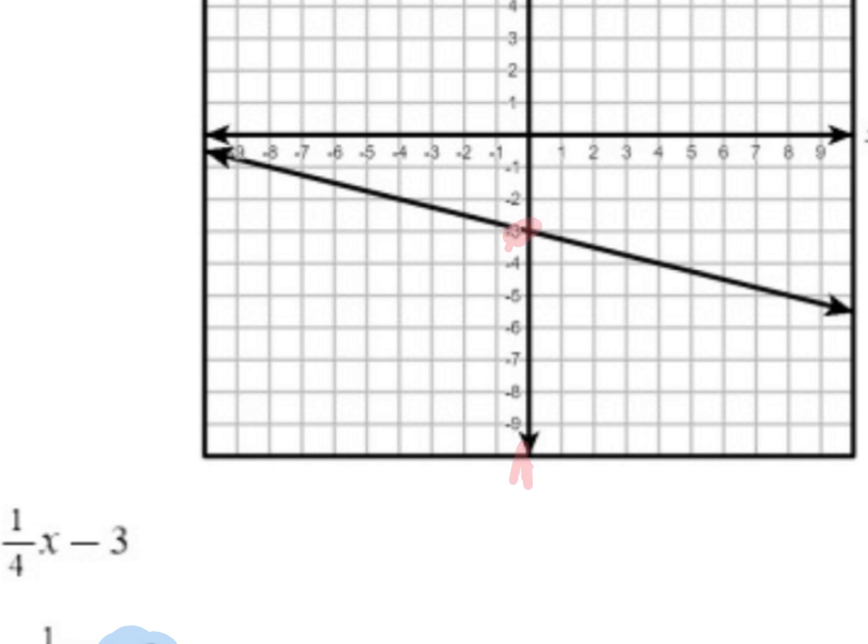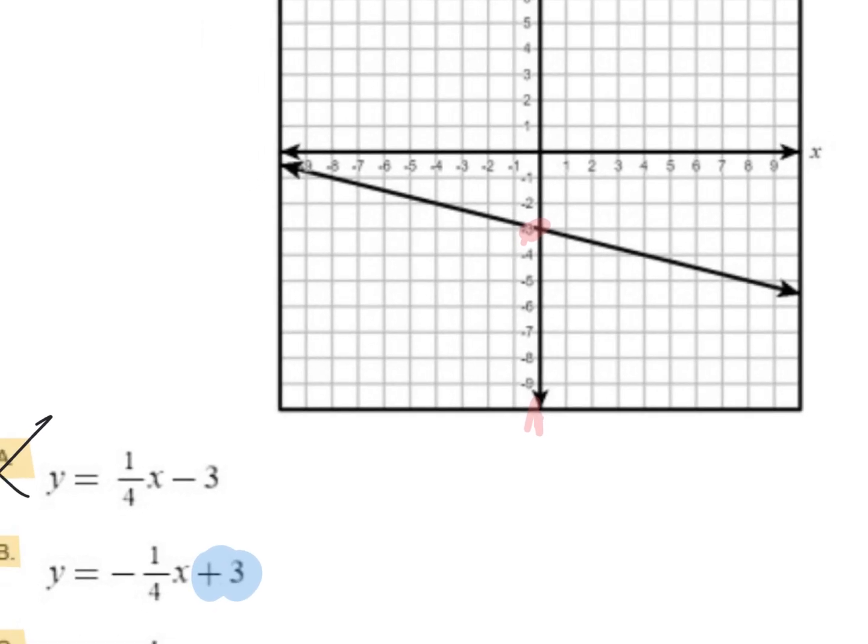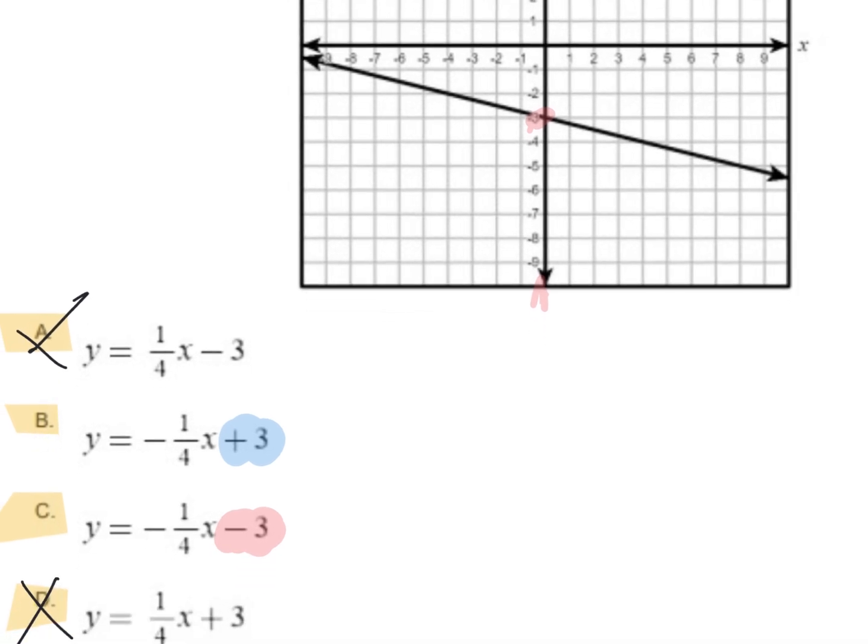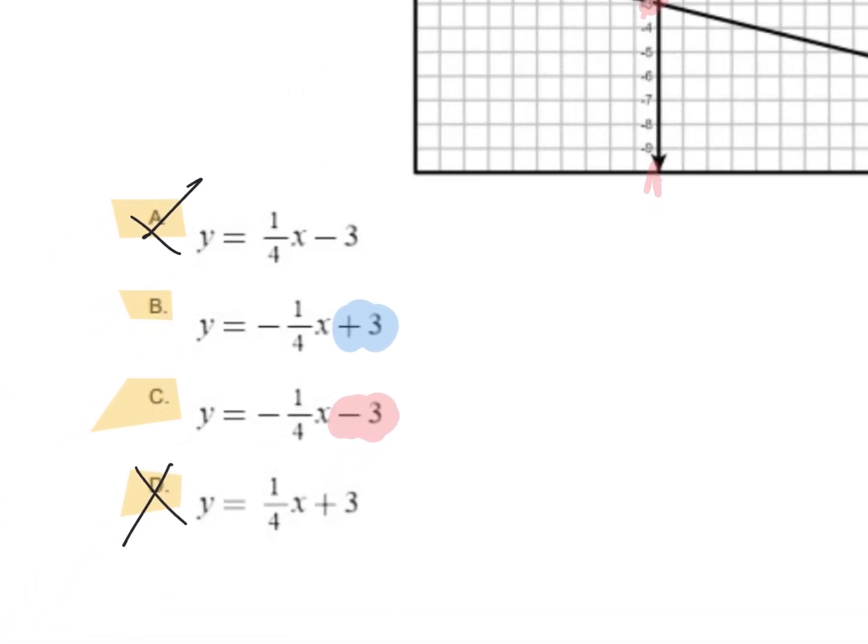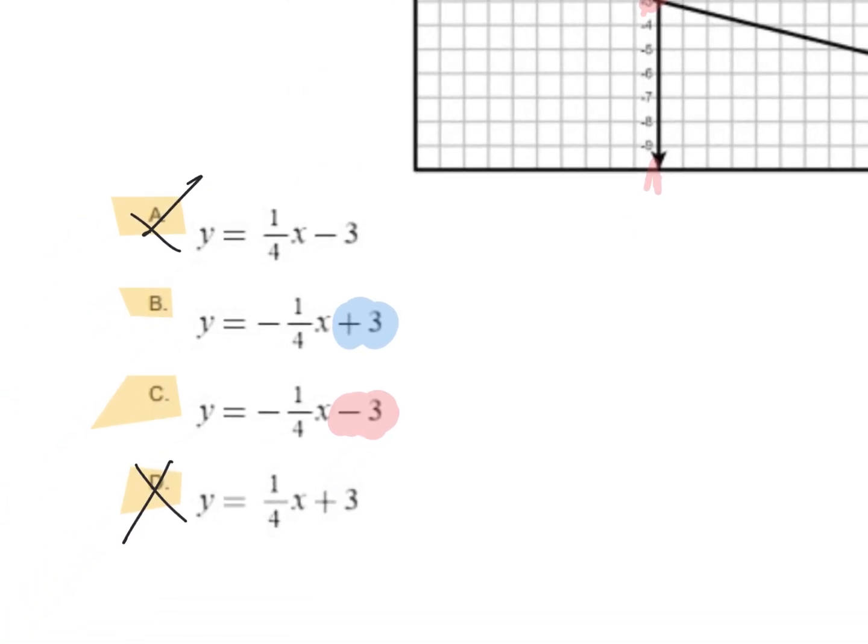Here I'm at negative 3. So I'm looking for an equation of a line that has a slope of negative 1 and a y-intercept of negative 3. And lo and behold, here is my answer as C.